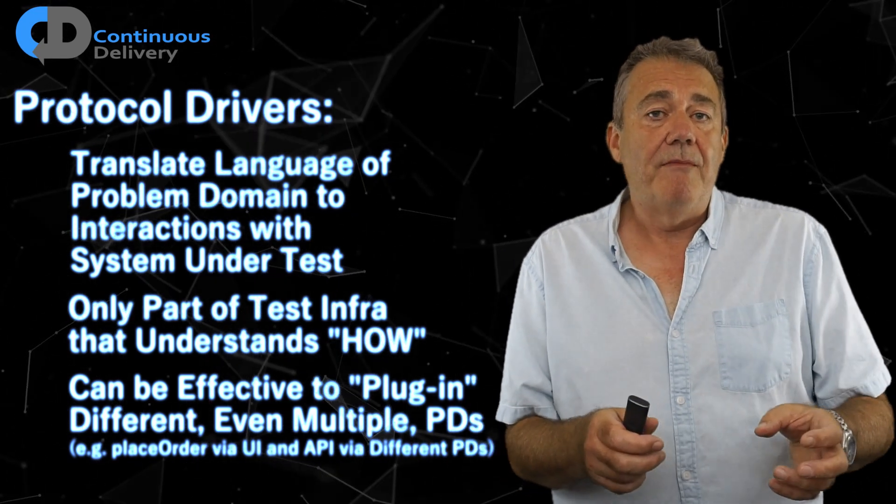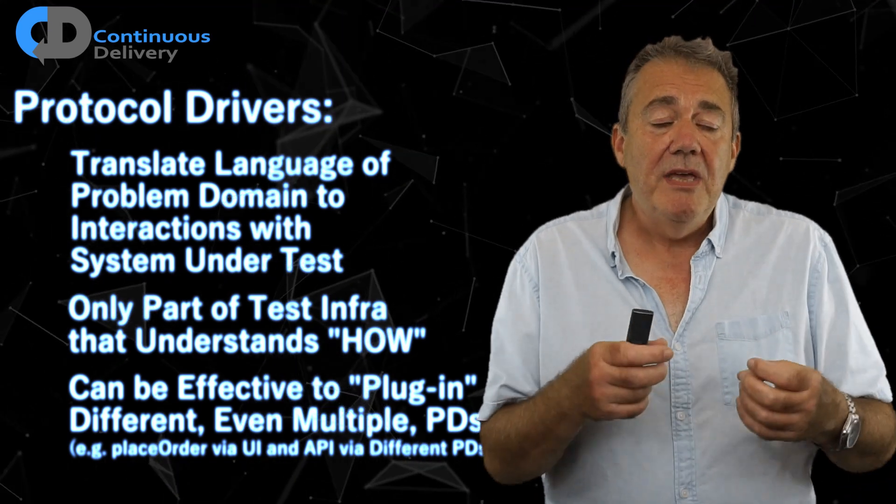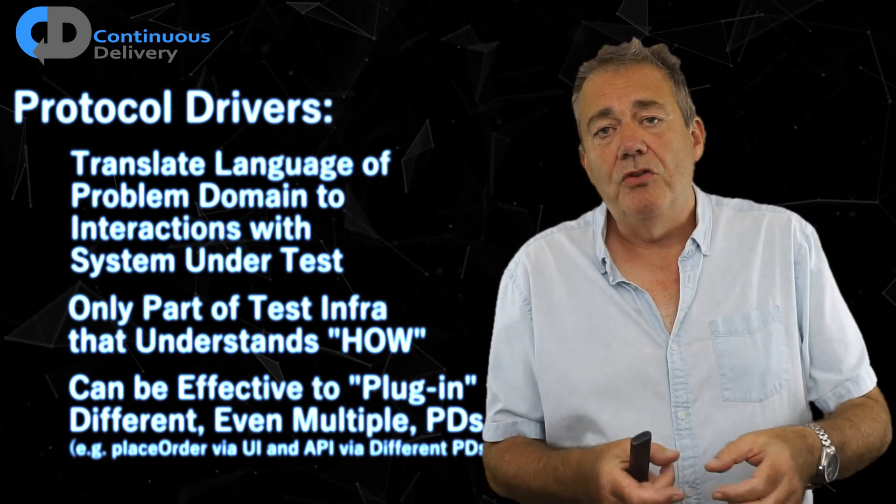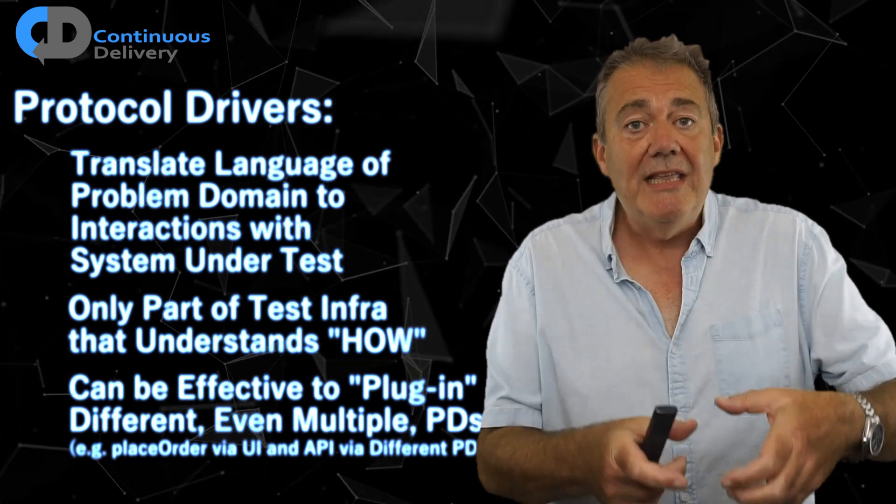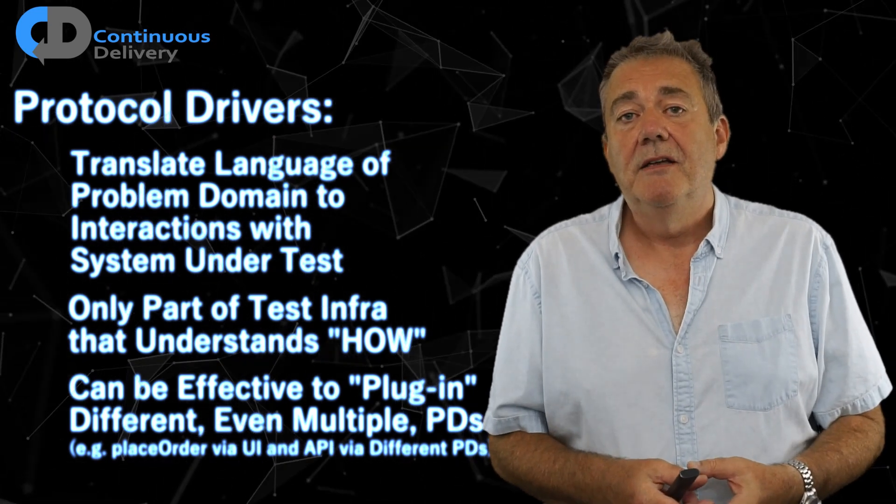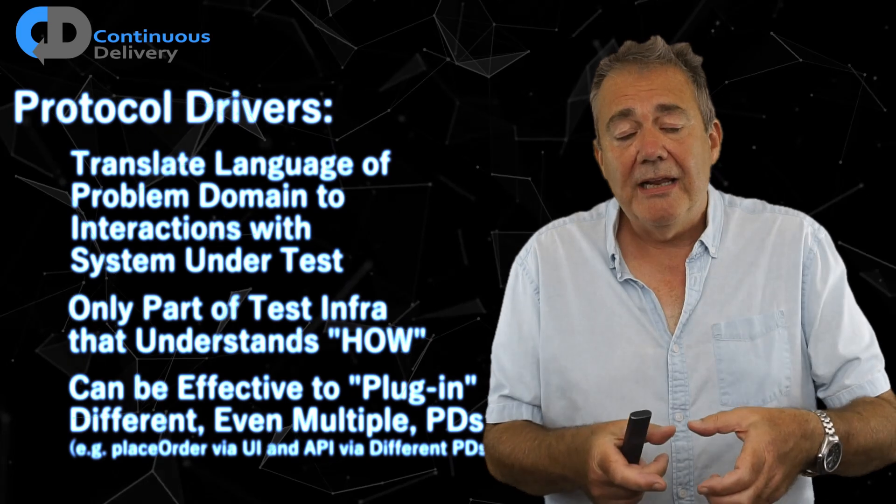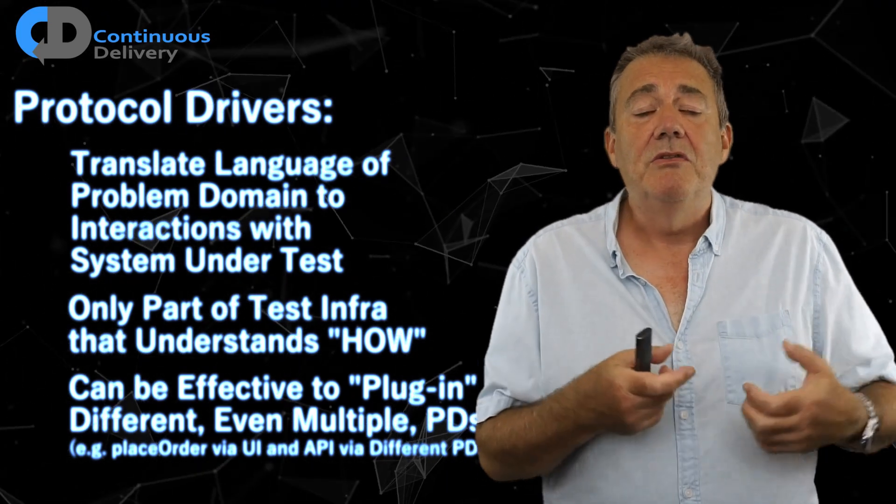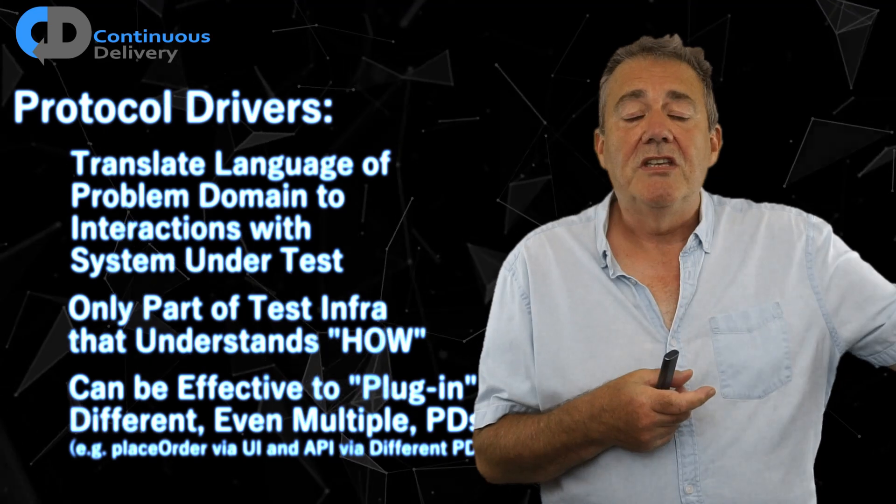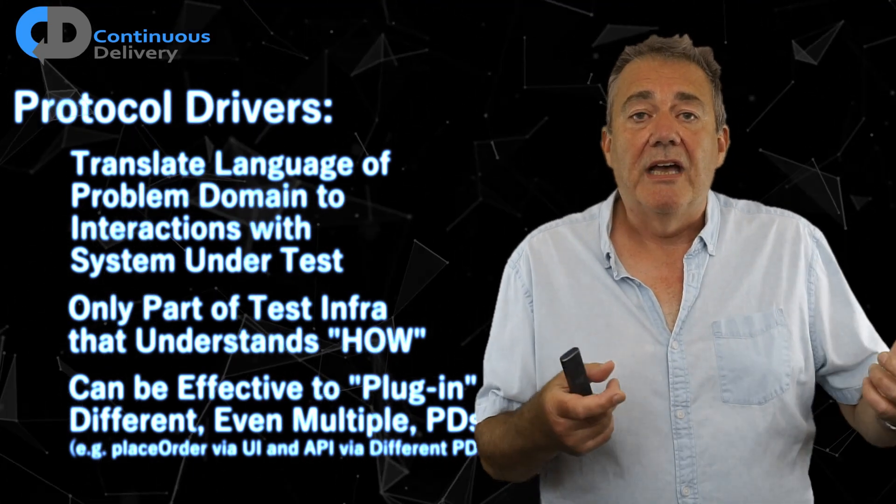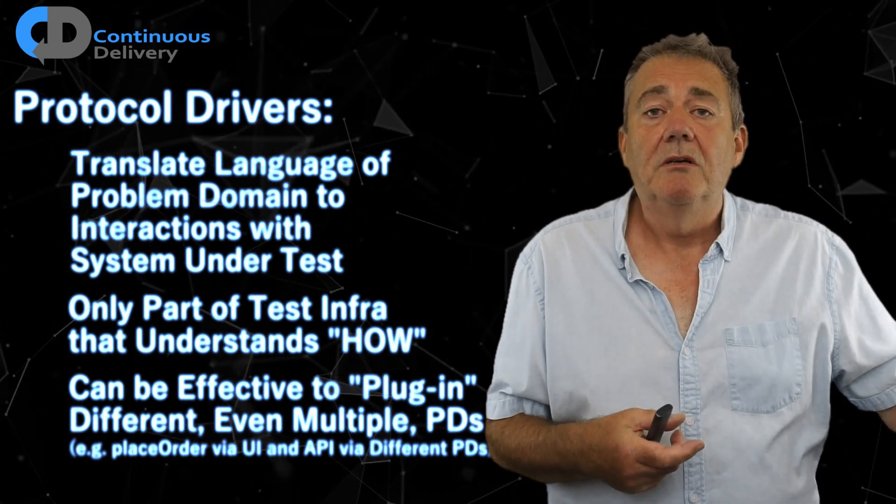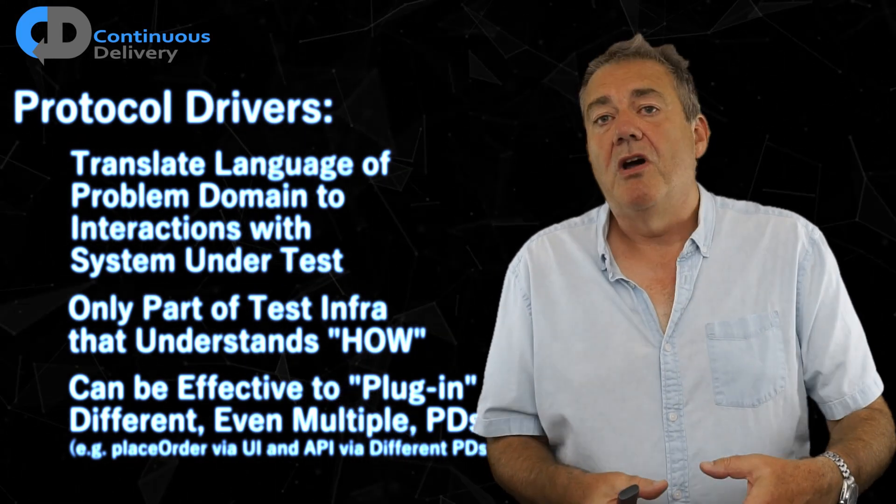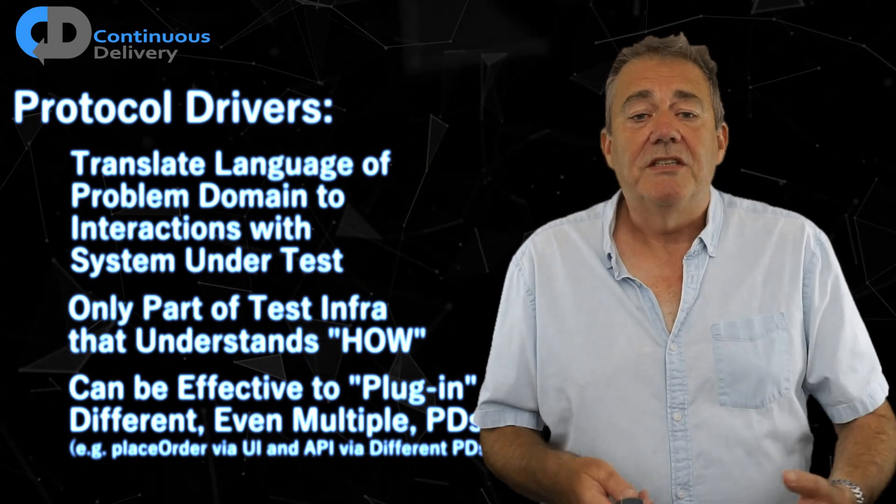Think for a minute what that means. It means that the only part of our test infrastructure that understands the detail of how your system works is in the protocol driver layer. That is hidden completely from the test cases. In the test cases, you don't say things like search for this box or click on this button. You say, buy a book, put the book in the shopping cart. The protocol driver understands what it needs to do.